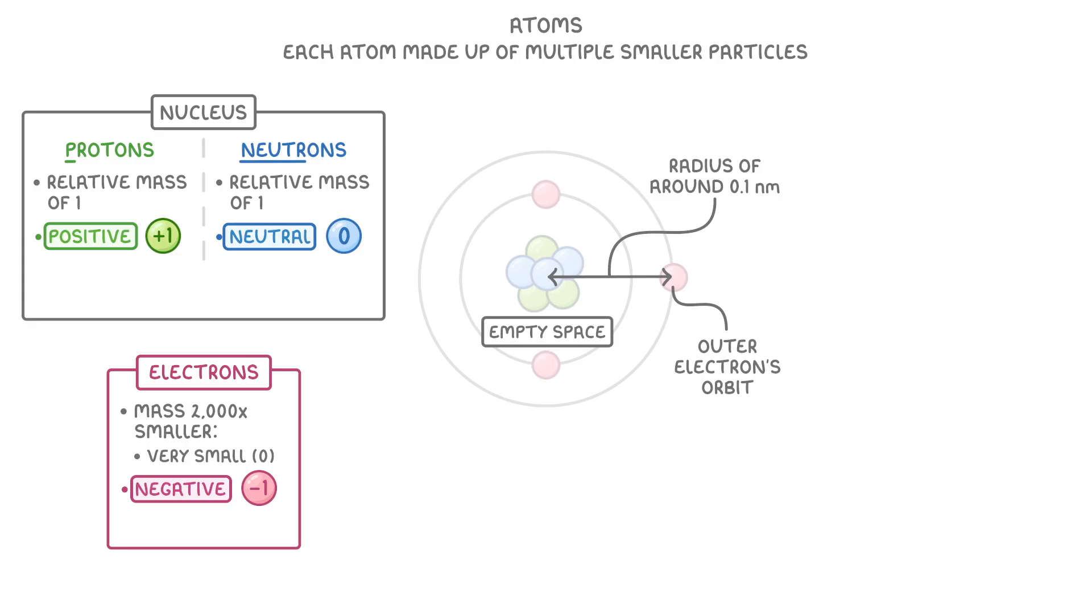Now although it looks pretty big in this picture, the nucleus is actually really tiny. If we compared its width to the width of the atom itself, the nucleus is 10,000 times smaller. Although the electrons are actually even smaller. And if we were to draw them to scale, they'd be too small to see.